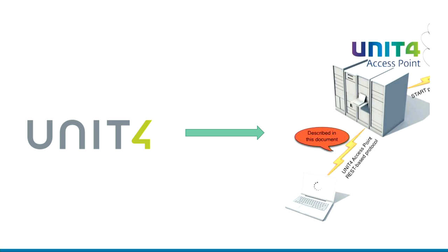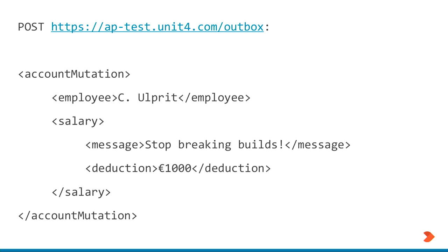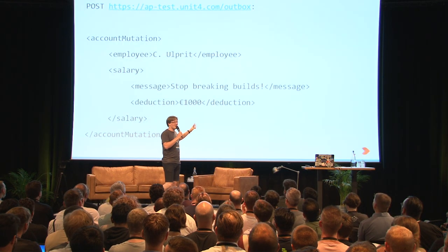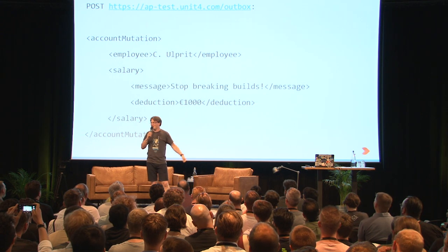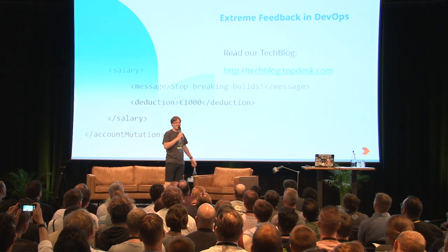Anybody know Unit 4? It's a salary payment provider and they have an API. So guess what kind of request gets sent next time somebody breaks the build? Something like this: 'You want to keep your salary? Don't break the build.' Any build masters out there — I'm going to open source this on GitHub. You only need to acquire the correct credentials and you're good to go to help motivate your developers to keep the build stable.